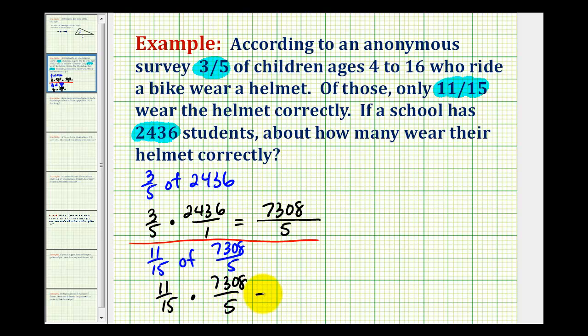So again, we'll have to multiply 11/15 and 7,308 all over five. Again, these numbers are getting a little bit large, but this is the correct process. So we're going to have 11 times 7,308 in the numerator. That's going to be 80,388. And then 15 times five in the denominator. That's going to be equal to 75.